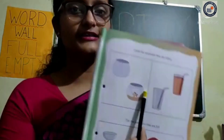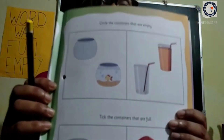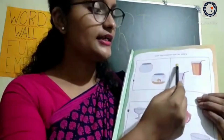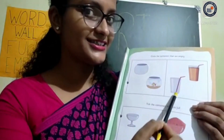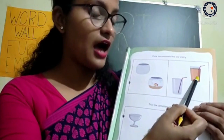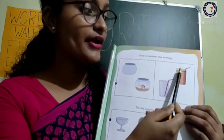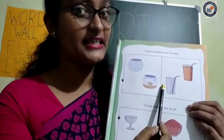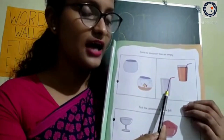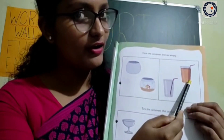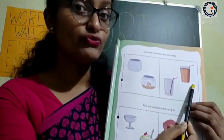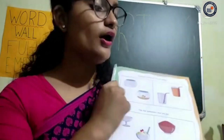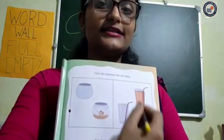Next picture — these are glasses. In the first glass, there is a straw but no juice, so it is empty. In the next glass, there is a straw and juice, so it is full. We have to circle the empty one, so you all have to circle this first glass.